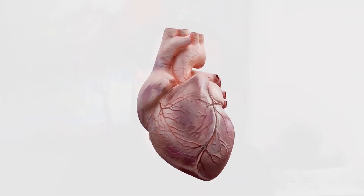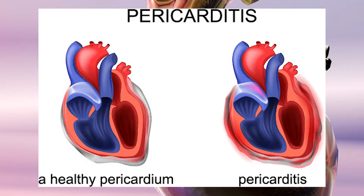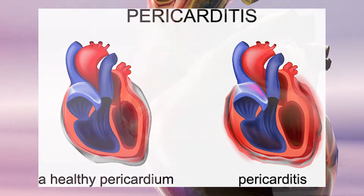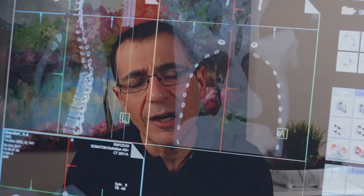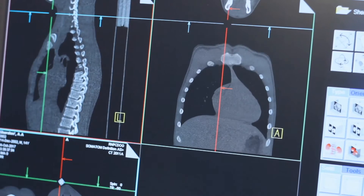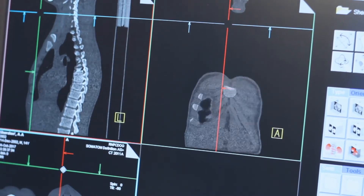However, when this lining around the heart becomes inflamed, that can cause this syndrome of pericarditis, and that inflammation can cause that sac to also accumulate increasing fluid, and that can have some consequences on the heart.